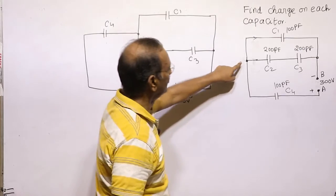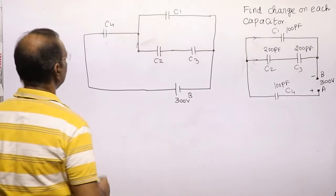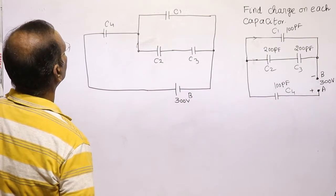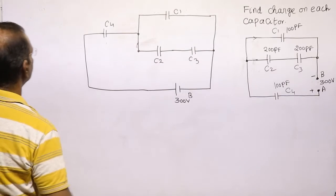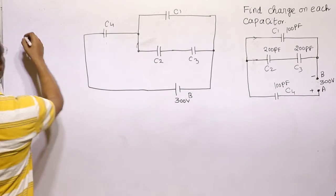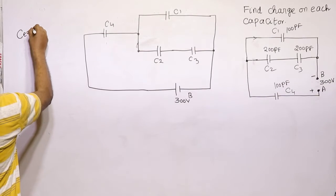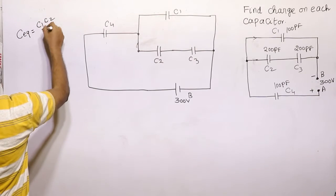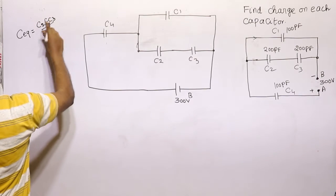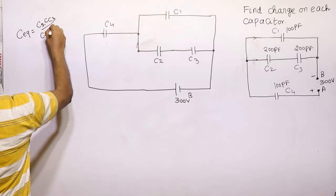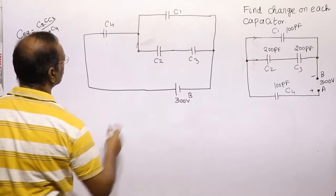This parallel combination is in series with C4, which goes to the battery. Now, C2 and C3 are in series. For the series combination, the equivalent capacitance is C_eq = (C2 × C3) / (C2 + C3).